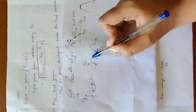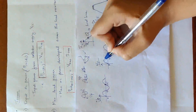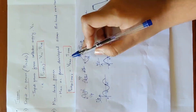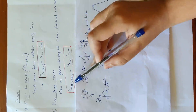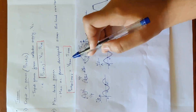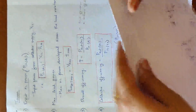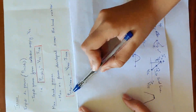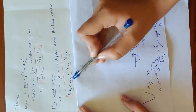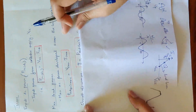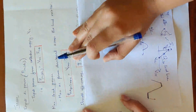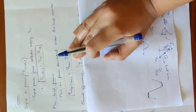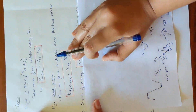The AC signal varies, so we use RMS values — basics you studied in first year. Overall efficiency is defined as output power divided by input power.